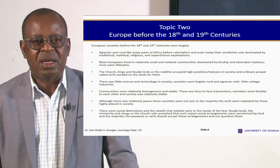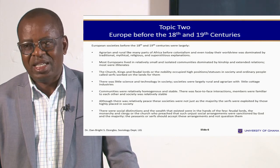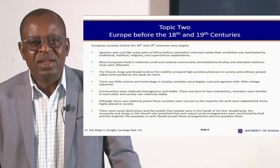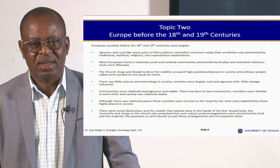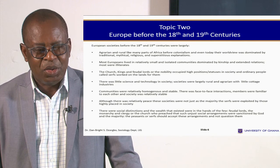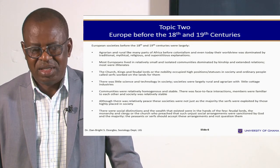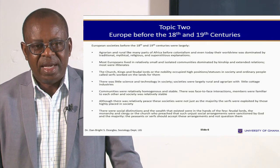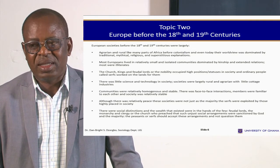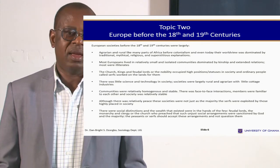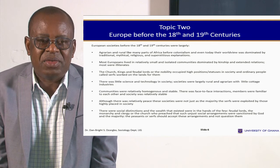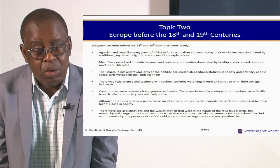Their worldview was dominated by mythical, religious and superstitious explanation, as most of us have in Ghana now. Most Europeans lived in those communities throughout their life with little interaction with the outside world. At that time, the church — particularly the Roman Catholic Church — and the kings, the feudal lords, or what we sometimes refer to as the nobility, were at the top of society, enjoying all the resources. The rest of the people were peasants, or in their own terms, they called them the serfs.